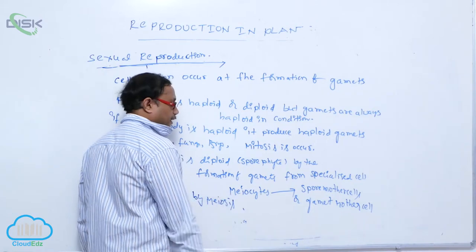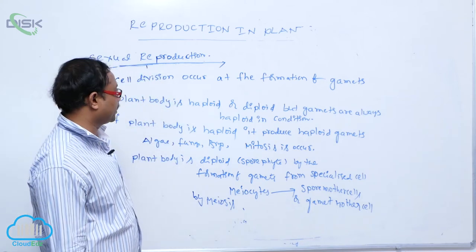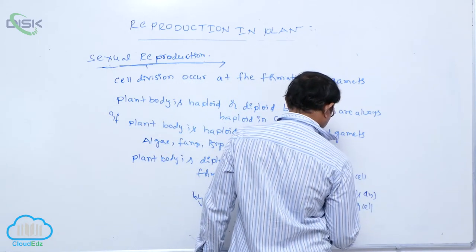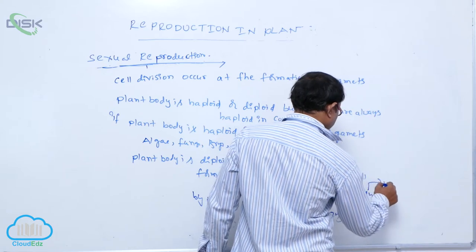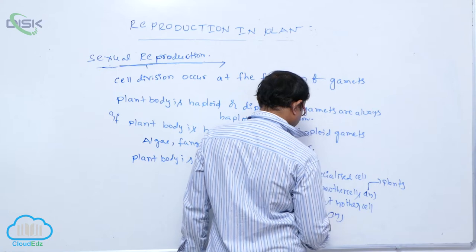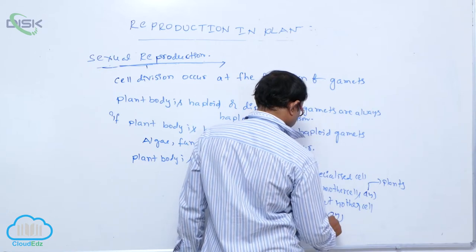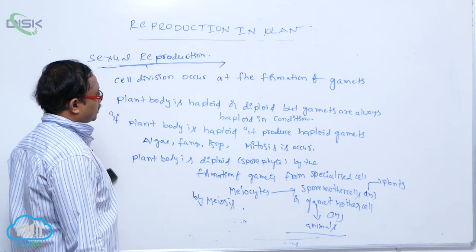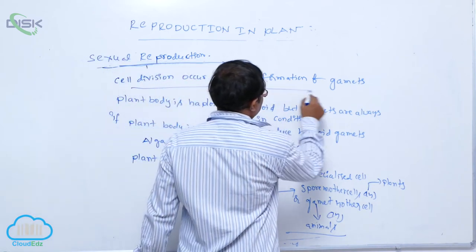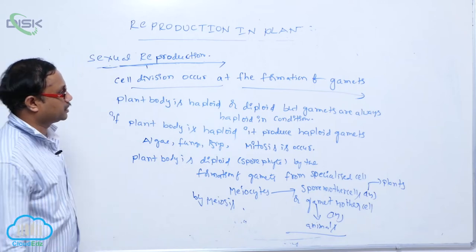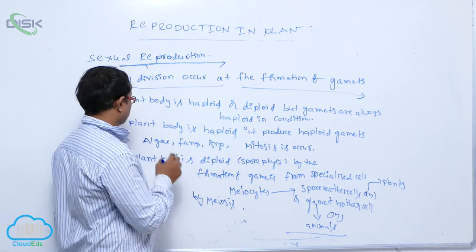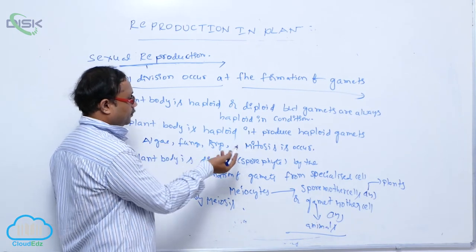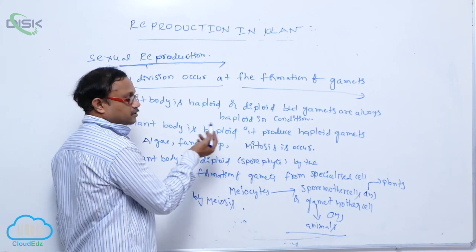Meiocytes do not occur in haploid cells — they always occur in diploid conditions. So the spore mother cells and gamete mother cells are both diploid. These spore mother cells are present in the plant. So cell division occurs at the formation of gametes. Plant bodies may be haploid or diploid, but gametes are always haploid. If the plant body is haploid, it produces haploid gametes — as seen in algae, fungi, and bryophyta — and for formation of gametes, mitosis occurs.